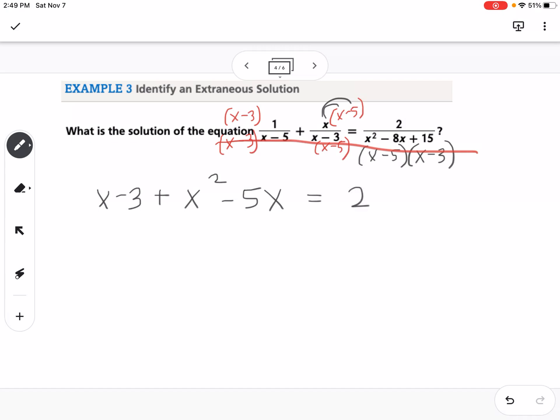We have x minus 3 plus—I'm going to distribute the x here—x squared minus 5x equals 2. So now we can tell this is quadratic, so we want to get it all on one side equal to 0, so this would be x squared minus 4x. Then we subtract the 2 over there minus 5. Then if we factor this, this would be x minus 5 and x plus 1. So then we would have our two solutions would be x equals 5 and x equals negative 1.